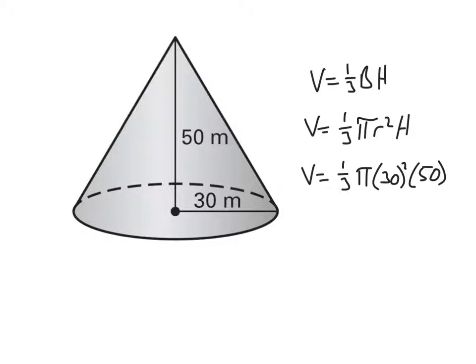So this is what you should have for your setup on this one. Again, it's a cone, so we're using one-third base times height. And the base is a circle, so we're using pi r squared for capital B. And then we plug in what we know, which is 30 for the radius and 50 for the height.